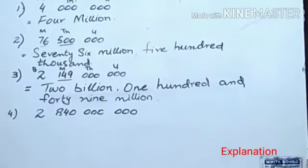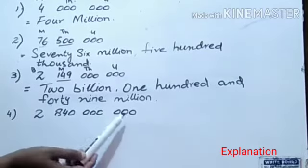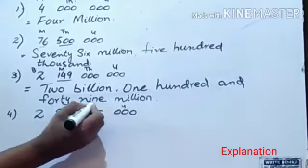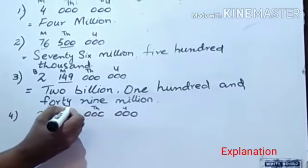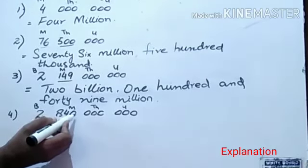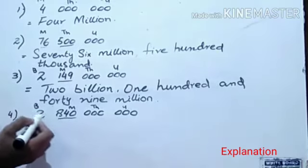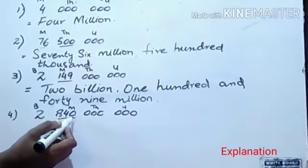Now fourth one is 2 what? Unit. Thousand. Million. And billion. Who is your billion? 2 billion. Read three members along with the head name: 2 billion 840 million.